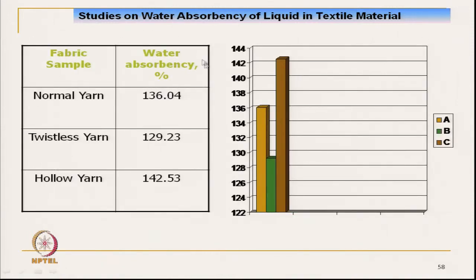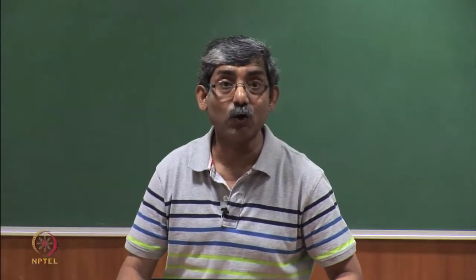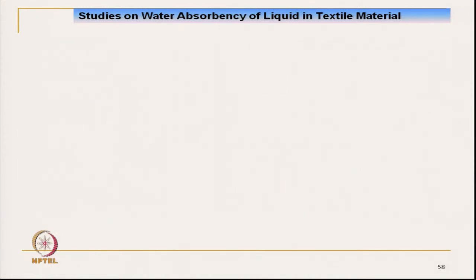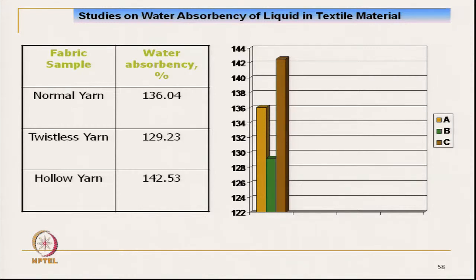Hollow yarn has very high pores, so it has very high absorbency — it absorbs well due to the pores. But it cannot wick well; its wicking is less than twist-less yarn because due to the larger pore it cannot create sufficient capillary pressure. That is why wicking height is less. With increase in tortuosity of the pores, wickability reduces.